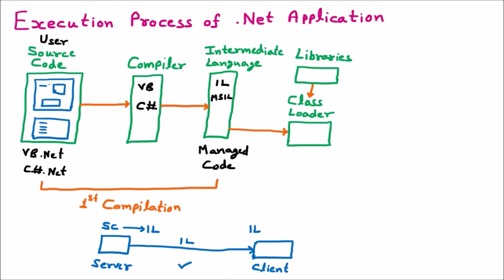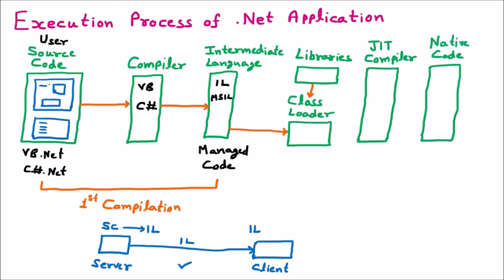Now the client clicks run on the project. When you run the project, another step of compilation goes on — that is called JIT compilation, done by the just-in-time compiler. The just-in-time compiler is very fast and it converts the intermediate language immediately to the machine code or native code. This JIT compiler takes the code loaded by the class loader with the help of libraries and converts it to the native code, which runs on the operating system. This conversion from IL to native code is called the second compilation.